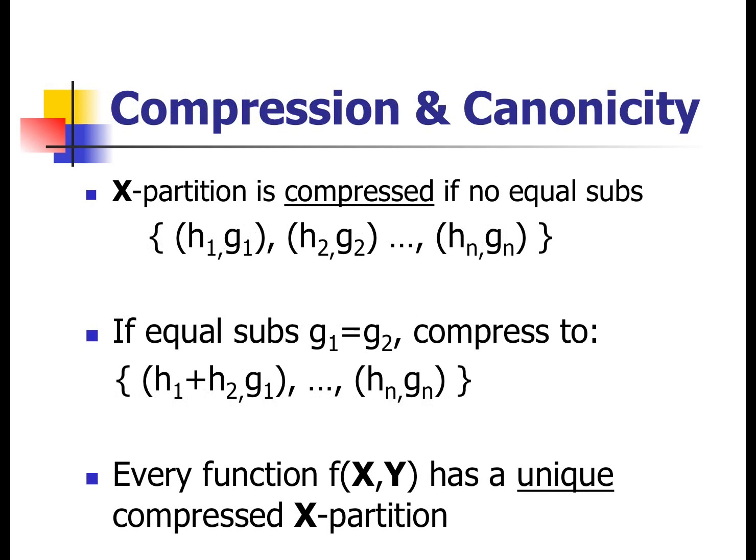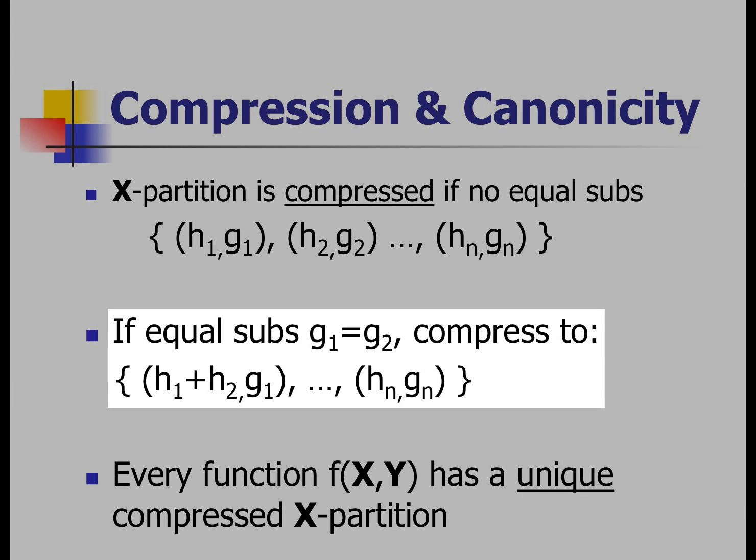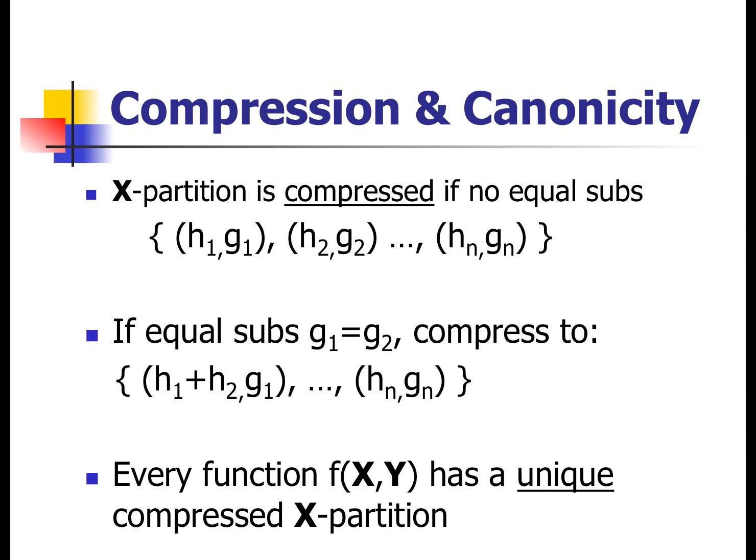This is the first result that gives us canonicity. We will say that an x partition is compressed if it does not have any equal subs, meaning you cannot have two of these g's that are equal. If that's the case, it is called compressed. If it's not compressed in the sense that maybe g1 and g2 are equal, we can always compress it this way by disjoining the corresponding primes and copying one of these guys. Now, the main theorem is this. For a function over a split of its variables x and y, there is a unique compressed x partition. Once you take the variables of the function and divide them into x and y, and you tell me, get me a compressed x partition, there's only one. And that's why, as you see next, you get the canonicity.